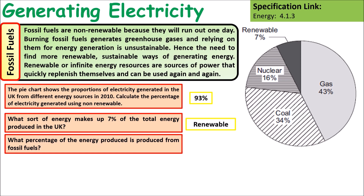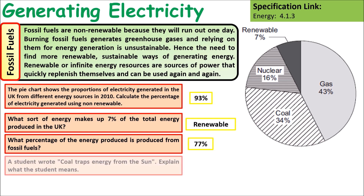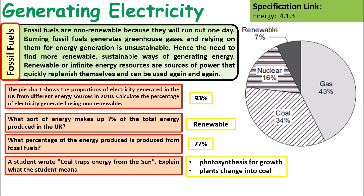A student wrote that coal traps energy from the sun. To explain what the student means: plants used energy from the sun during photosynthesis for growth, and those plants were then changed or turned into coal over time.